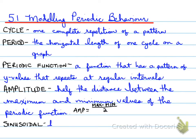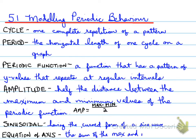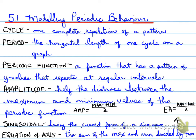A sinusoidal function is a function having the curve form of a sine wave. In this unit, we're going to talk a lot about sinusoidal functions, and sinusoidal functions are always periodic. Finally, the equation of the axis is the sum of the maximum and minimum divided by 2 — that is, max plus min, divided by 2.